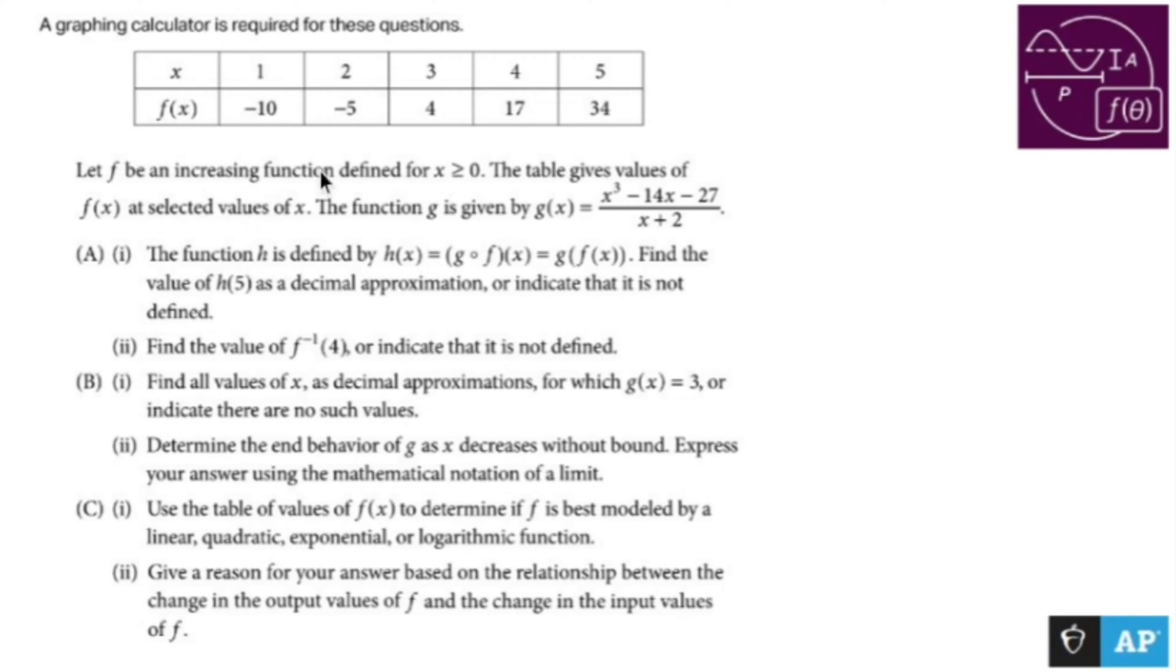Let f be an increasing function defined for x > 0. The table gives values of f at selected values of x. The function g is given by g(x) = (x³ - 14x - 27)/(x + 2). The function h is defined by h(x) = g(f(x)).